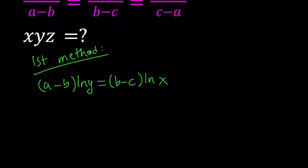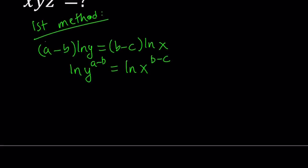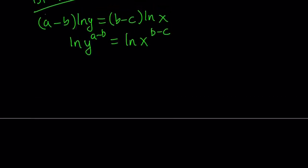So a minus b times ln y equals b minus c times ln x. And then from here, we can just go ahead and move the a minus b and make them powers. So this becomes ln y to the power a minus b equals ln x to the power b minus c. And since both sides are ln, and ln is just like a one-to-one function, we can safely say that from here, y to the power a minus b equals x to the power b minus c.